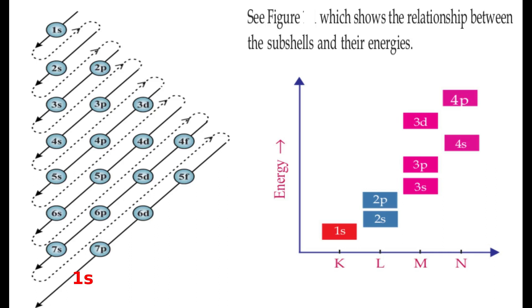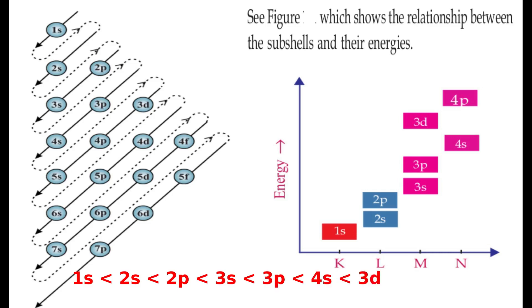The order of filling sub-shells is: 1s, then 2s, then 2p, then 3s, then 3p, then 4s, then 3d, and so on.